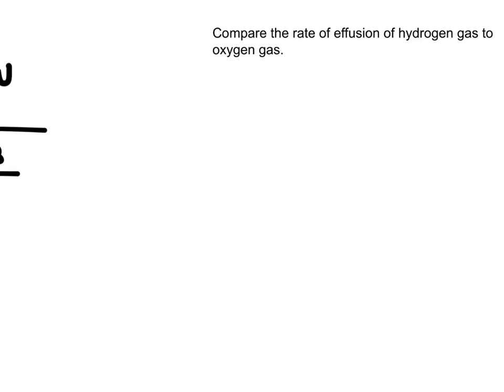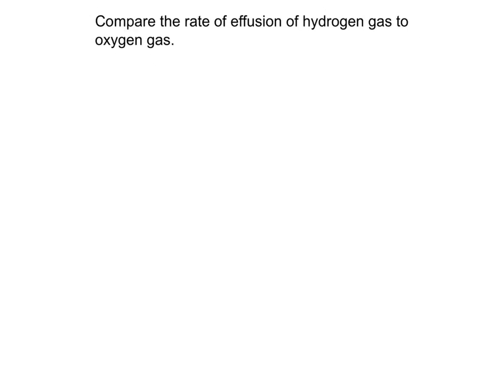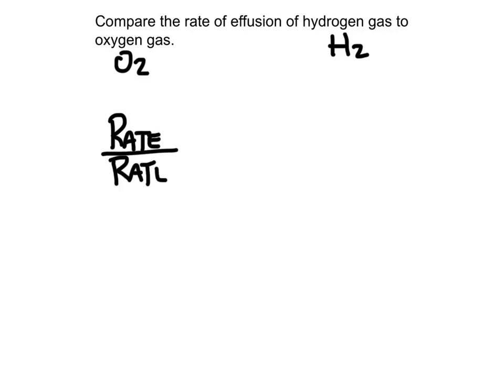Let's look at an example — the kind of question you might see in chemistry class. It says: compare the rate of effusion of hydrogen gas to oxygen gas. Those are our two gases to compare. When dealing with hydrogen gas and oxygen gas, we're talking about the H2 molecule and the O2 molecule. The equation is the rate of gas A over the rate of gas B, and you always want to have the lighter gas on top — in this case, hydrogen.